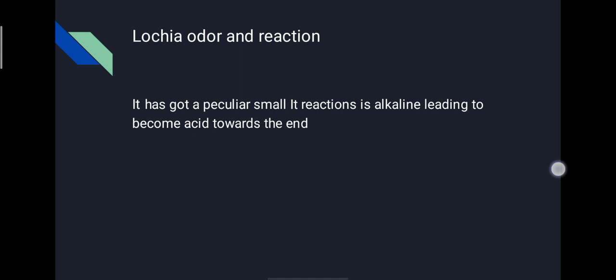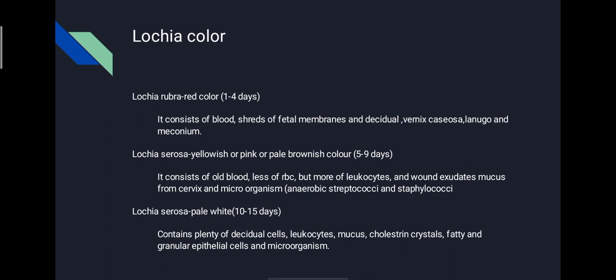The color of the lochia varies and it is named accordingly. Lochia rubra is red in color, persists for 1 to 4 days, and consists of blood, shreds of fetal membrane, decidua, vernix caseosa, lanugo, and meconium. Lochia serosa is yellowish, pink, or pale brownish in color, persists for 5 to 9 days, and consists of old blood, fewer RBCs but more leukocytes, wound exudate, mucus from cervix, and microorganisms including anaerobic streptococci and staphylococci. When general condition of the body becomes low, these organisms may flare up and cause pelvic inflammatory disease or puerperal sepsis.